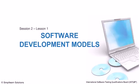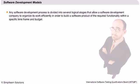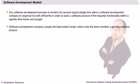In the first section, let us understand the different software models being used in the industry. SDLC is an acronym for Software Development Lifecycle. Usually, any software development process is divided into several logical stages which allows a software development company to organize its work efficiently in order to build a software product of the required functionality within a specific timeframe and budget. Software development companies adopt the best suited model which suits the team members and the software product. There are many development life cycles that have been developed, each to achieve different required objectives.